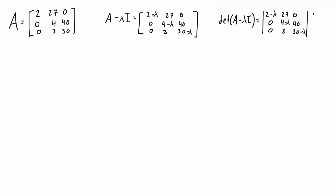The way I like to do that is by rewriting the first column and the second column to the right of the determinant bars, and then we draw diagonal lines going from top left to bottom right. We take the product of the elements that fall on each of these blue lines and add them all together, then subtract all of the products of the elements on the green lines going from top right to bottom left. You could do this by writing out the full cofactor expansion, but I find this is easier or at least faster.